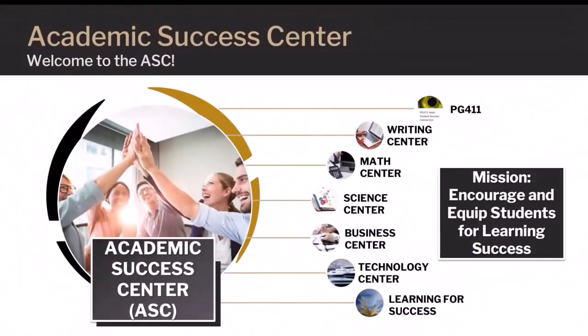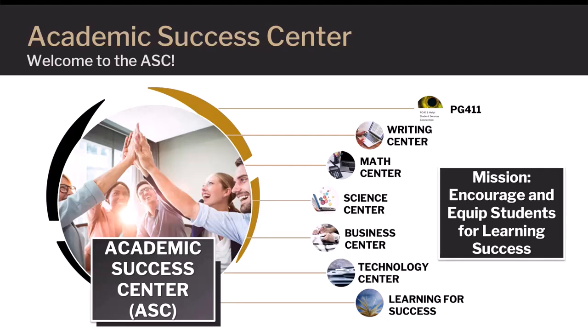Welcome to the Academic Success Center. The Academic Success Center, or ASC, is the hub of six academic centers and PG411 Help Student Success Connection. The six academic centers include the Business Center, Learning for Success, Math Center, Science Center, Technology Center, and Writing Center. The mission of each center, and the ASC as a whole, is to encourage and equip students for learning success.